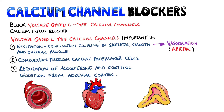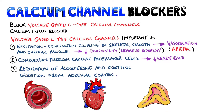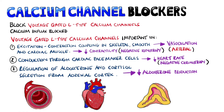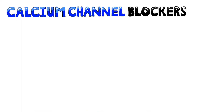By acting on cardiac myocytes, calcium channel blockers reduce the force of contraction of the heart — this is a negative inotropic effect. They also slow down the conduction of electrical activity within the heart, leading to a slower heart rate — a negative chronotropic effect. When they block the calcium signal in the adrenal cortex, they lead to a decrease in aldosterone production.